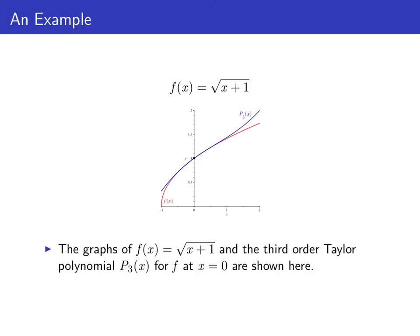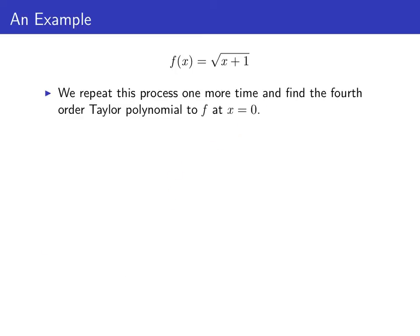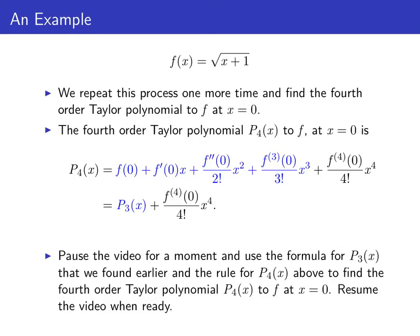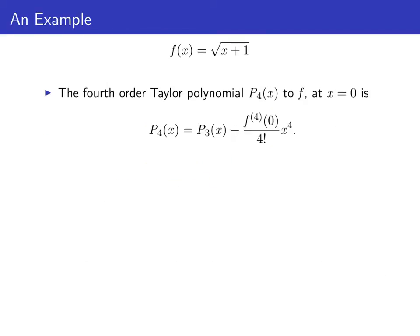Here we show the graph of p₃(x) against the graph of f(x). It's getting a little harder to see, but the graph of p₃(x) is actually fitting the graph of f(x) better around x = 0 than did p₁(x) or p₂(x). Let's repeat the process one more time and find the fourth order Taylor polynomial to f at x = 0. The pattern should emerge that p₄(x) is just p₃(x) plus the fourth derivative of f at zero divided by four factorial times x to the fourth. Pause the video for a moment and find the fourth order Taylor polynomial for f at zero.